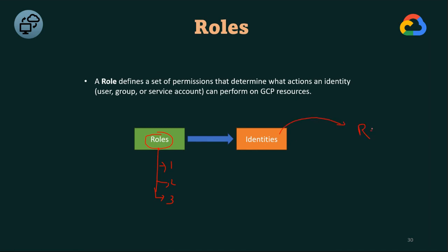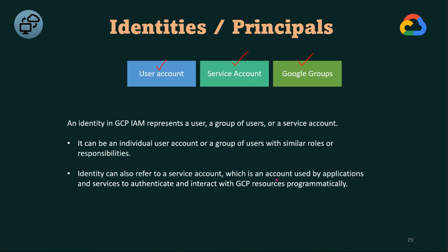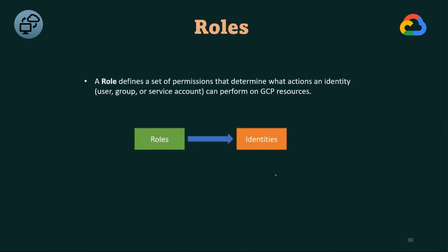These identities will then have access to resources like Compute Engine virtual machines, Kubernetes Engine, and Cloud Storage. The permissions determine what actions these identities can perform on those particular resources. So that is the roles concept: identities — users, group of users, service accounts — are assigned roles, and a role defines a set of permissions that determine what actions an identity can perform on GCP resources.